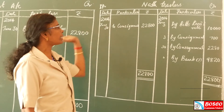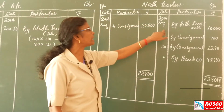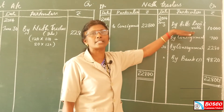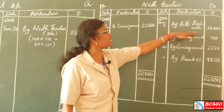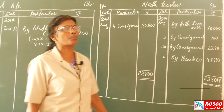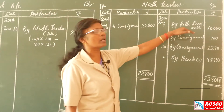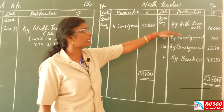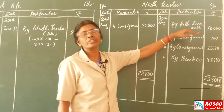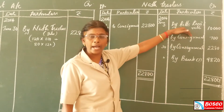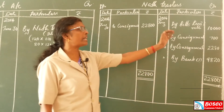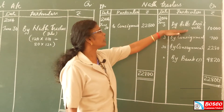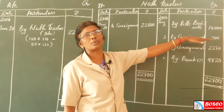In the consignee's account, on 3rd June, North Traders accepted a bill for Rs. 10,000 as an advance. This is recorded as: Bills Receivable Account debit to North Traders — Rs. 10,000. The advance payment received as a bill is entered on the credit side of the North Traders account under Bills Receivable.